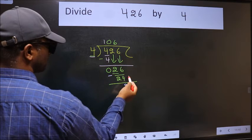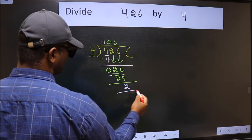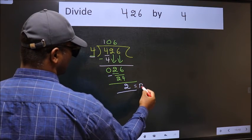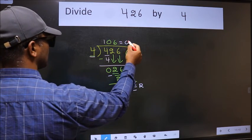No more numbers to bring down. So we stop here. This is our remainder and this is our quotient.